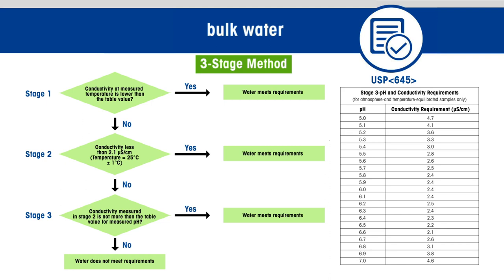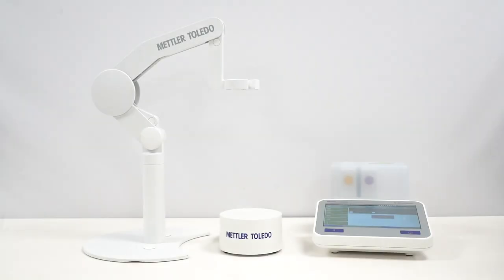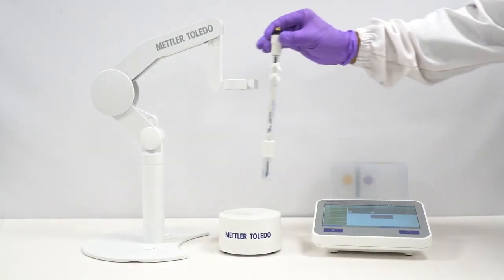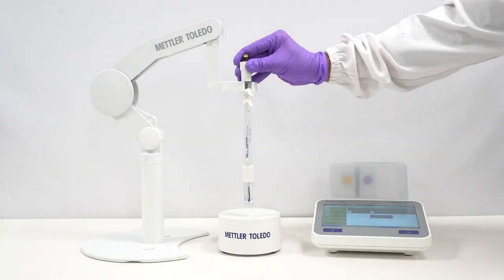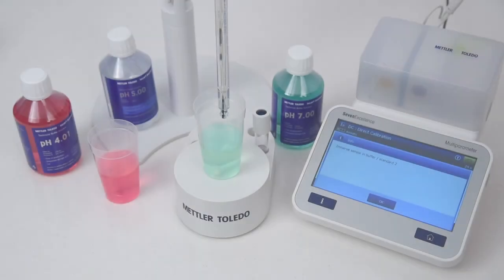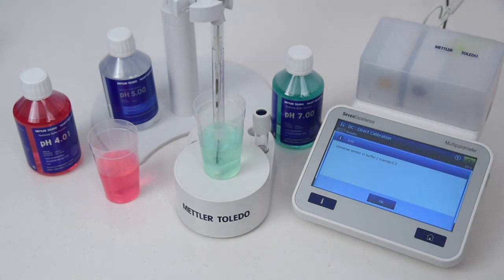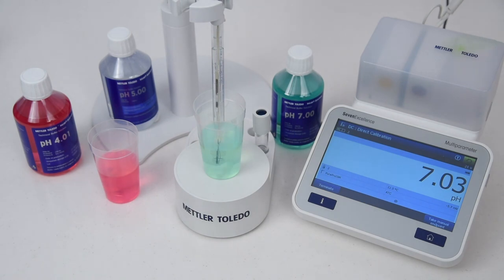For stage three, it is recommended to measure pH within five minutes of the conductivity determination of stage two. It involves the pH measurement of the sample and hence requires a pH meter and a pH electrode, adapted for samples presenting a low ionic strength. Calibrate the pH sensor according to USP 791.